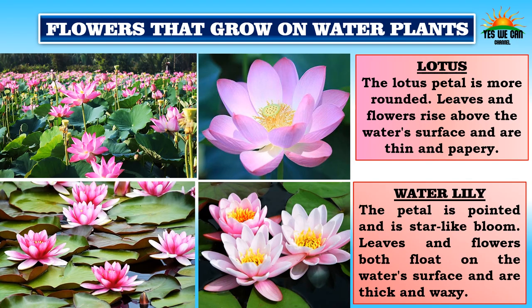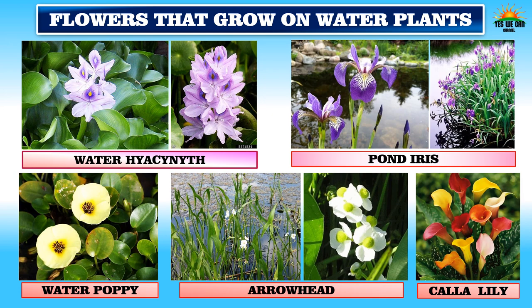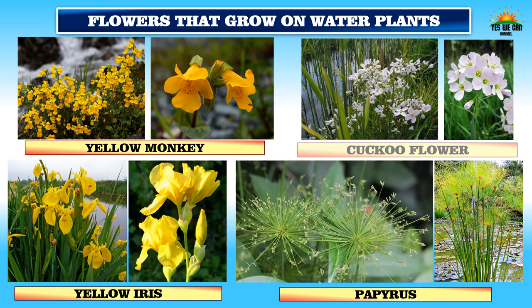Now let's visit the world of flowers which grow on water plants. These are lotus and water lily — they look similar. To identify them: the lotus petal is more rounded, and its leaves and flowers rise above the water surface and are thin and papery. The water lily petal is pointed and star-like; its leaves and flowers both float on the water surface and are thick and waxy. More flowers on water plants include water hyacinth, pond iris, water poppy, arrowhead, calla lily, yellow monkey flower, cuckoo flower, yellow iris, papyrus, button bush, forget-me-not, pickerel weed, yellow floating heart, and yellow water buttercup.